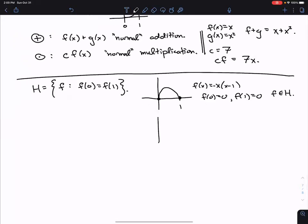And so this F is indeed in my set H. What else could I do? I could do stuff like this. Here's a really simple function. So I could take a function, which is a straight line between the point (0,1) and the point (1,1).